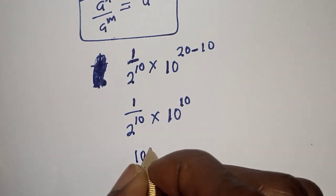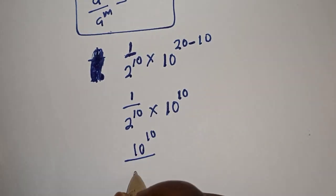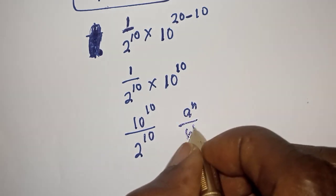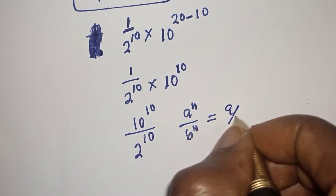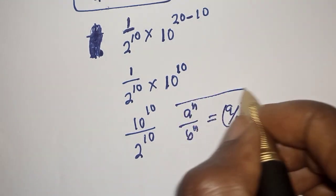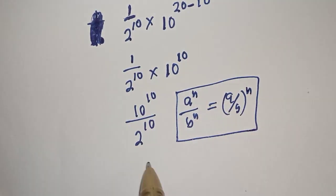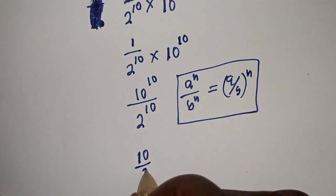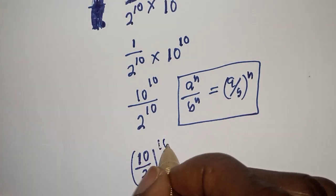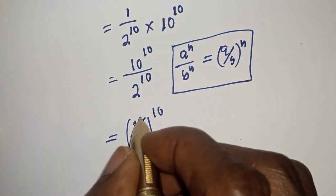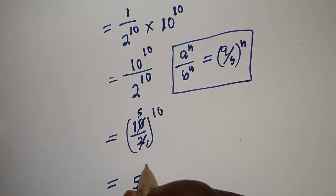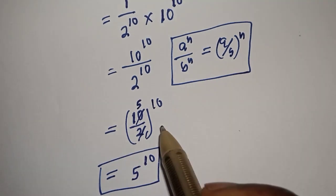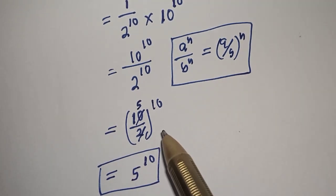Here we have 10 raised to power 10 over 2 raised to power 10. If you have a raised to power n over b raised to power n, this is equal to (a over b) raised to power n. So we get 10 over 2, raised to the power 10, which is 5 raised to the power 10. This is the final answer. Thank you for watching — don't forget to like, share, comment, and subscribe to my channel.